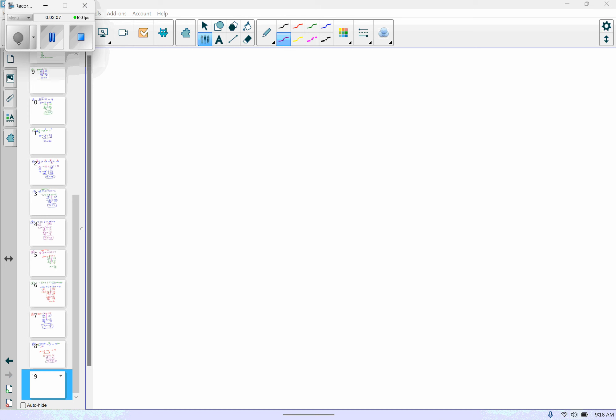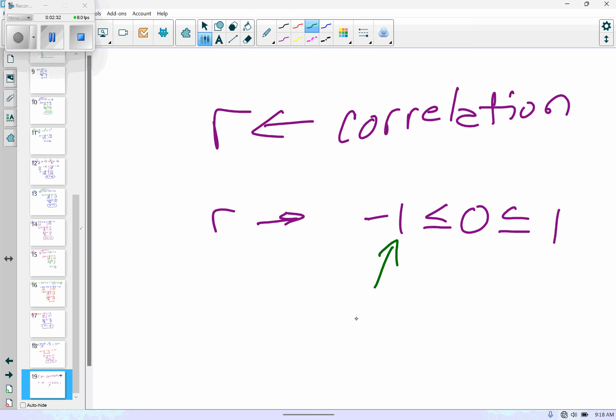The closer your R value is, so we're going to start talking about the correlation, and we will be using the R value. This is for correlation. Basically, correlation R is from negative one to zero to one. If this is negative, this means I would have a negative slope.